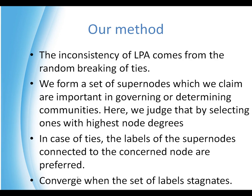We propose a new method. We know that the inconsistency of label propagation comes from the random breaking of ties. Instead of breaking them randomly, we form a set of super nodes — nodes with the highest node degree, say the top 10% of the total number of nodes. Whenever a tie occurs in the updating step, the labels of the super nodes connected to the node in question are preferred.